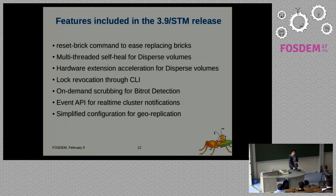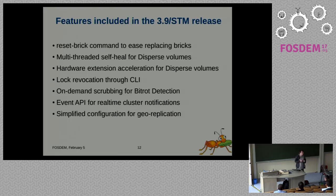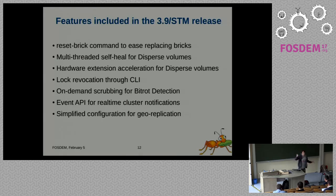We have bitrot detection: if data changes on the backend or disks start returning non-fatal read errors, we can detect them via a background scrubbing process. There is now an on-demand way of triggering this scrubbing and checking. We also added more APIs for eventing, so management infrastructure around the cluster can get notifications when bricks or servers go missing, crash, or disks are failing — and display these events in a web interface. It really helps administrators figure out what's wrong.